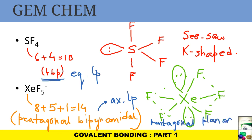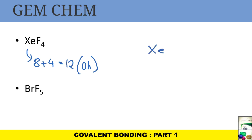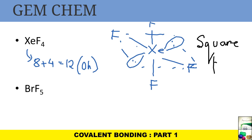For XeF4: xenon has eight electrons plus four from fluorine, giving twelve — an octahedral structure. In octahedral geometry, lone pairs always occupy trans positions to minimise steric repulsion. The two lone pairs sit above and below the equatorial plane (trans to each other), and the four fluorines are in the equatorial plane. The shape is square planar.